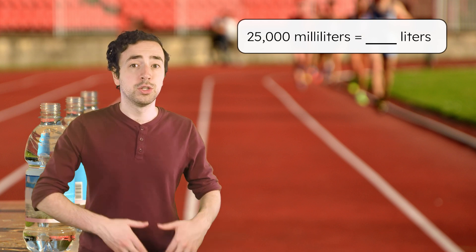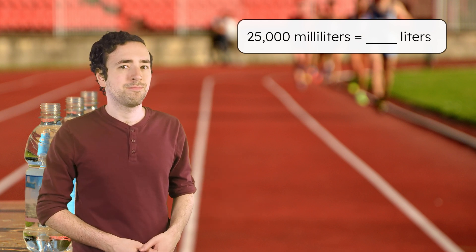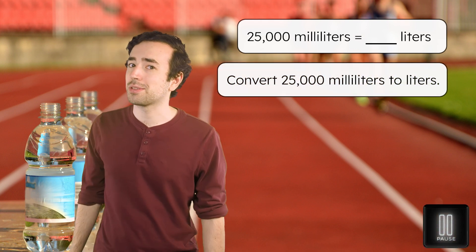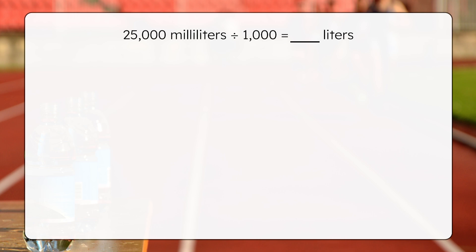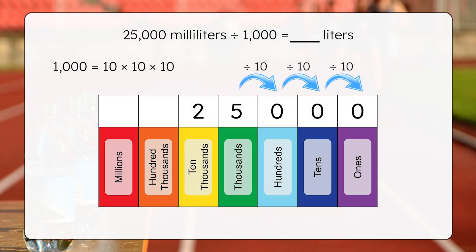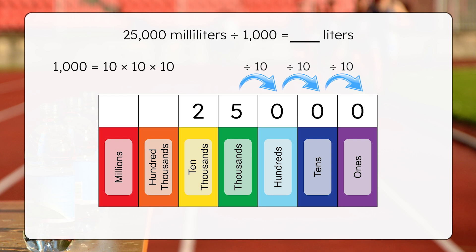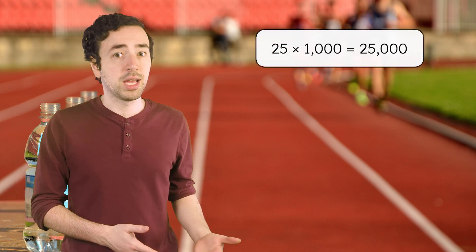Since we're converting from a smaller unit to a larger unit, we divide by 1,000. Pause here to solve in your guided notes. When we divide 25,000 by 1,000, we use a place value chart to visualize how the digits shift. Dividing by 1,000 is the same as dividing by 10 three times, so the digits shift three places to the right. That leaves us with 25 liters — a much easier number to work with. The water station starts with 25 liters of water, perfect for refilling bottles during the race. We can check our answer by multiplying: since 25 times 1,000 equals 25,000, our answer is correct. This also shows us how conversions work both ways.